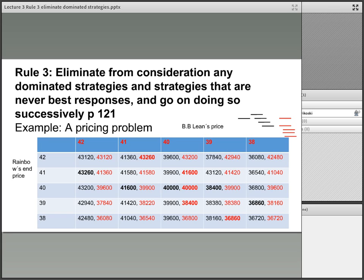Here you have rule number three. Eliminate from consideration any dominated strategies, in other words, strategies that are never best responses, and go on doing so successively. This is taken from page 121 of the Art of Strategy.